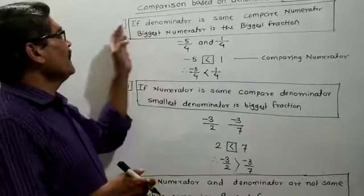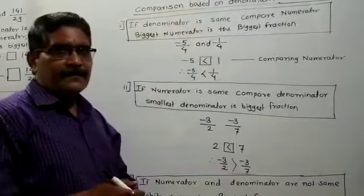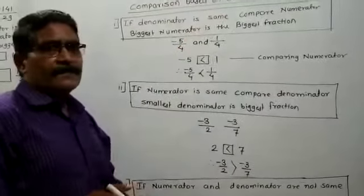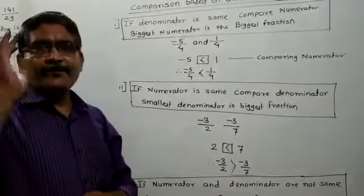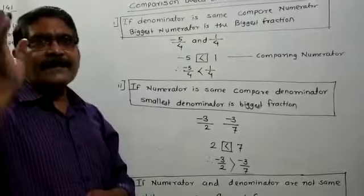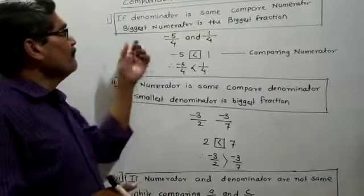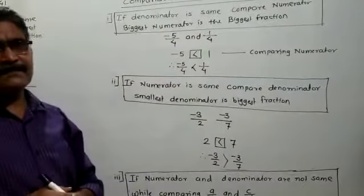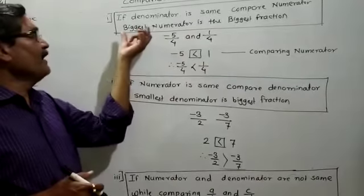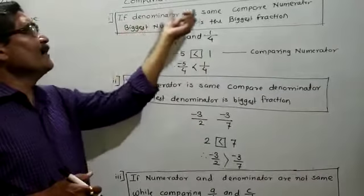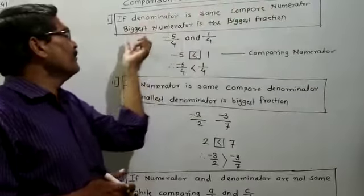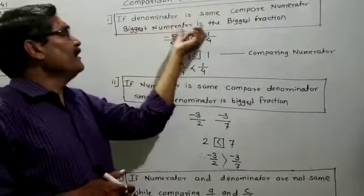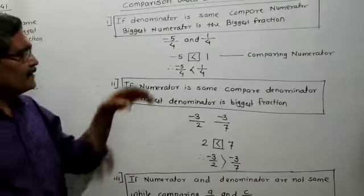If the denominator is the same, you have to compare the numerator. The biggest numerator is the biggest fraction. Keep in mind: if the denominator is the same, compare the numerator — the biggest numerator is the biggest fraction.